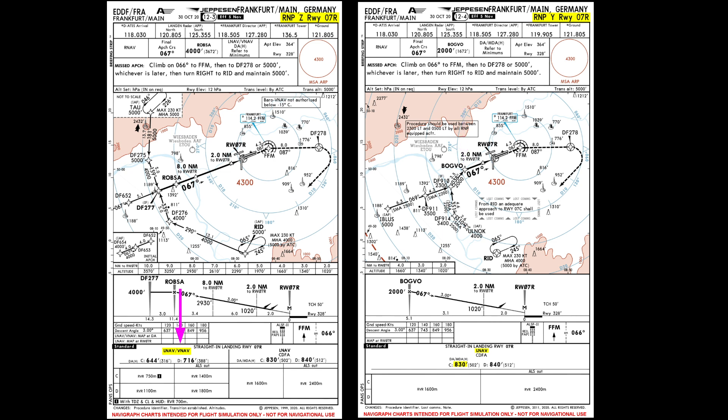Some other differences show that for the Zulu approach you can use an LNAV VNAV minimum, while for the Yankee approach there is only an LNAV approach available, so you can't fly a descent with managed descent mode. Also there's a note for the Yankee approach saying the procedure should be used between 2300 and 0500 local time by all RMP equipped aircraft. So these were some of the major differences between the RMP Zulu 07R and the RMP Yankee 07R in Frankfurt — same landing runway, same approach type based on RMP, but clearly some major differences.